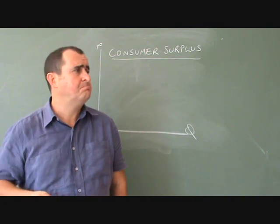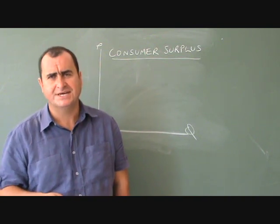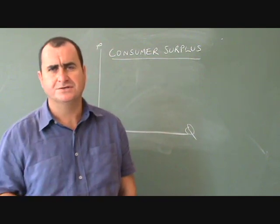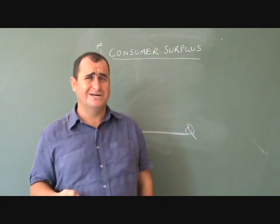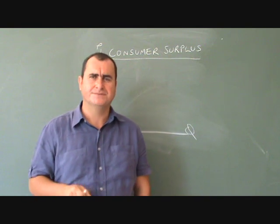You might be prepared to pay $200 for a ticket to a big sports match that you want to watch, but if the ticket only costs $120, we've got $80 of consumer surplus.